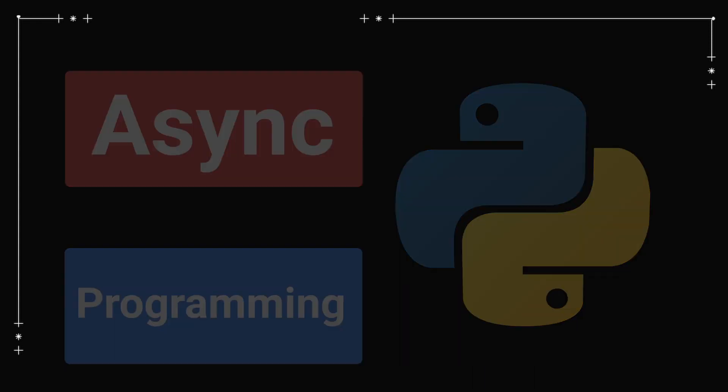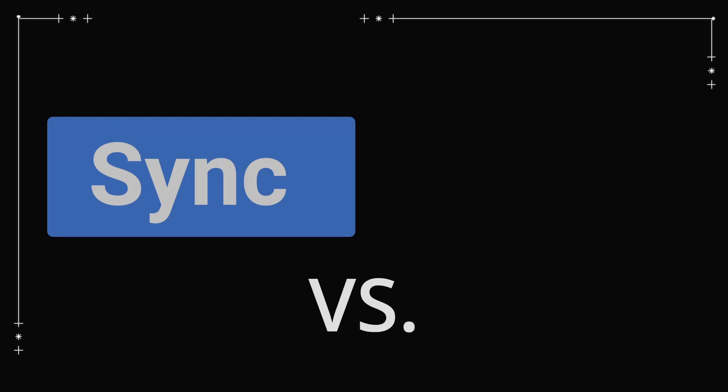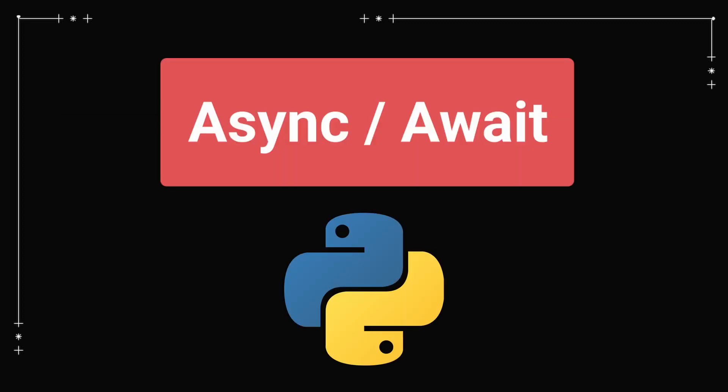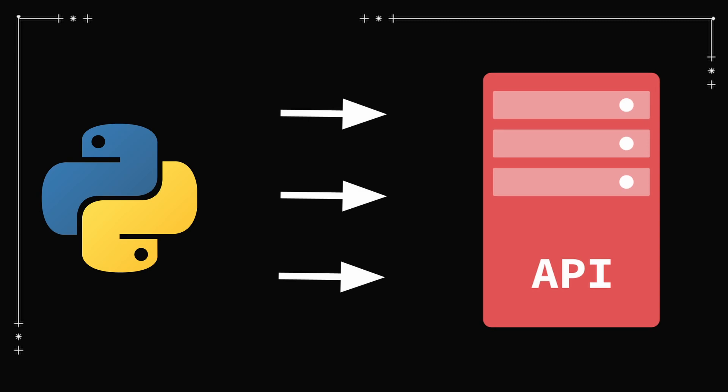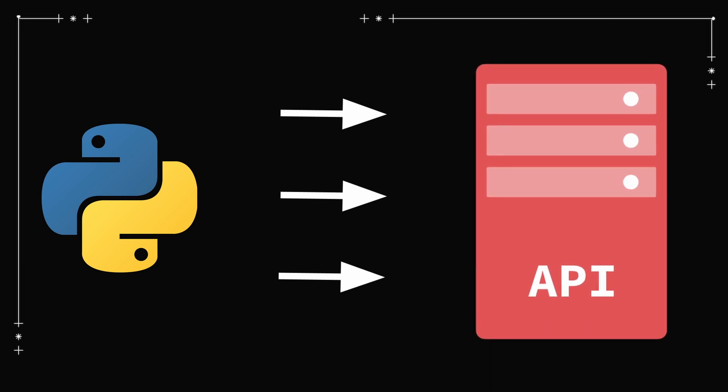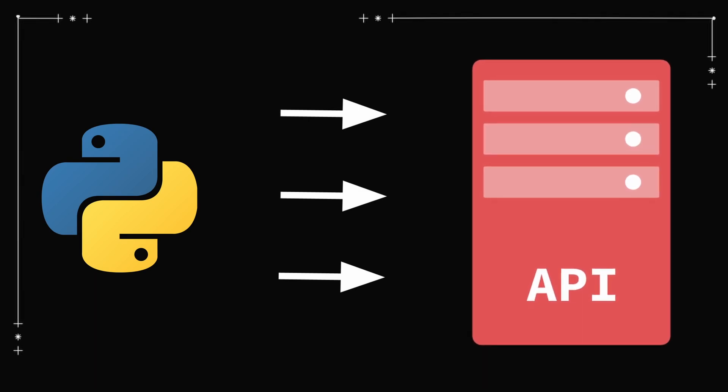We'll learn what the difference between synchronous and asynchronous programming is, how to implement it in Python, and we'll take it a step further and see how to make requests to an API asynchronously.